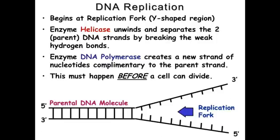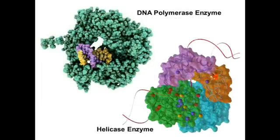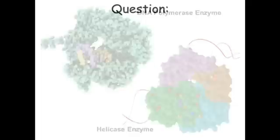Obviously, this has to happen before a cell can divide. Each half of the parent DNA acts as a template, and the new daughter strands are formed complementary to each. The helicase and DNA polymerase enzymes are themselves proteins — very complex proteins, as we can see — and we're going to be seeing very soon how these proteins are made.